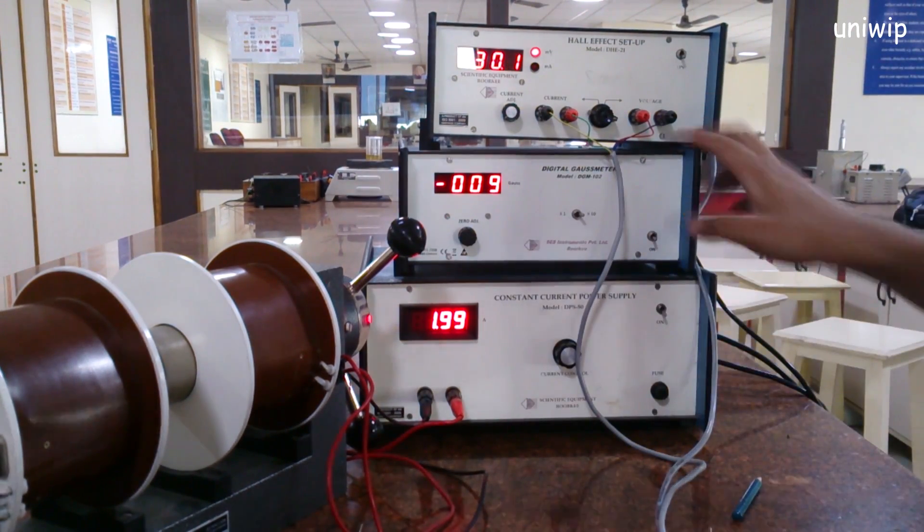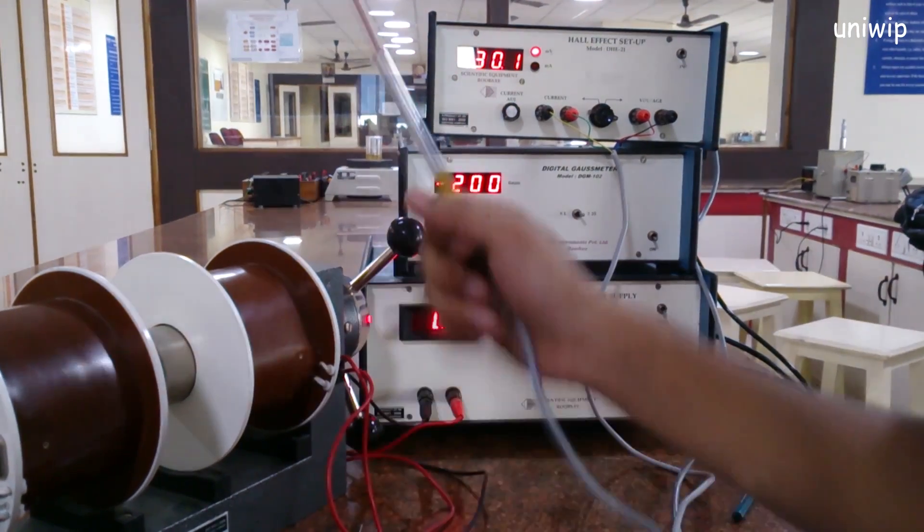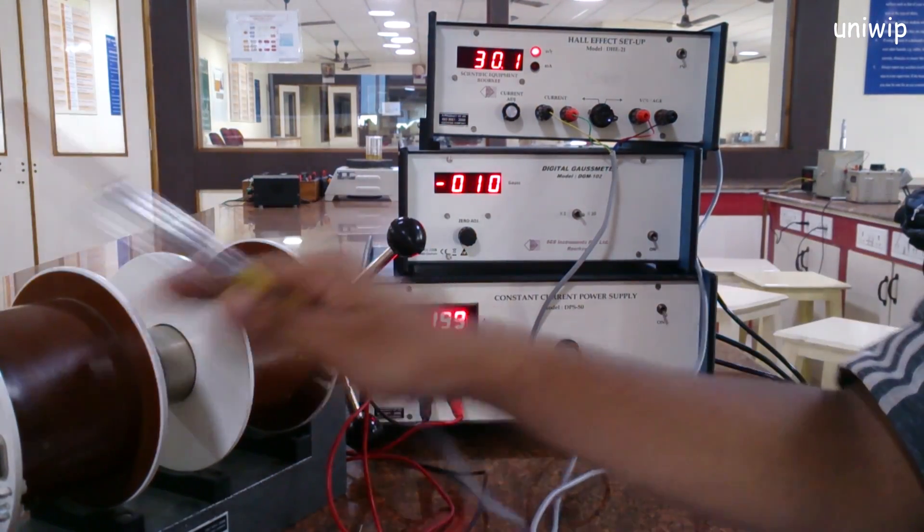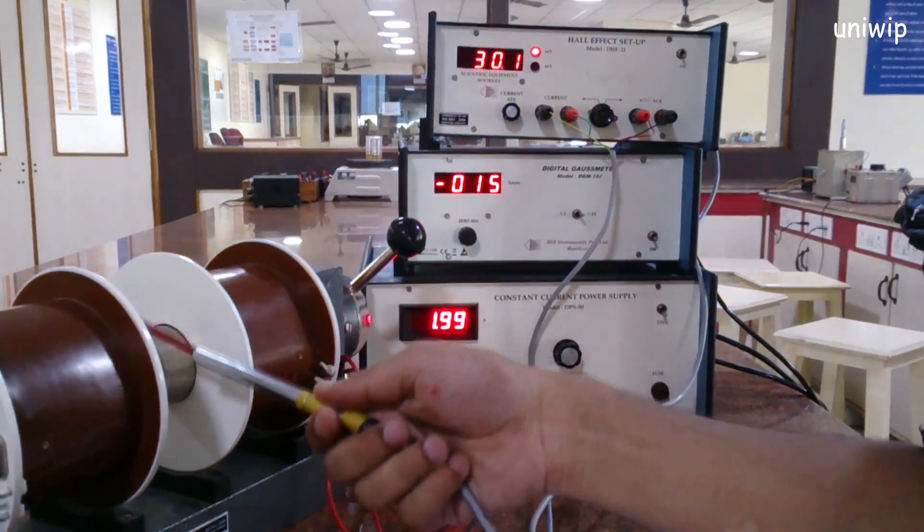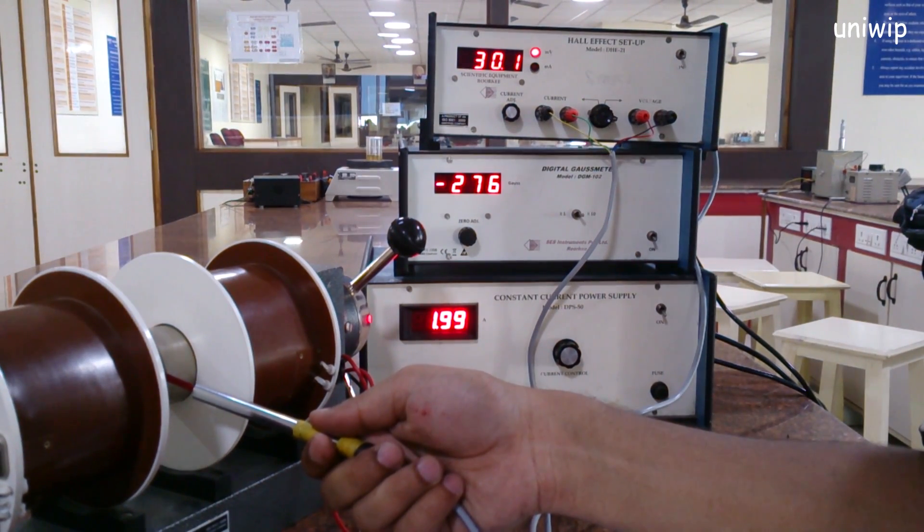This right here is my gaussmeter. This will help me measure the magnetic field strength within my electromagnet. This setup right here is my electromagnet. So when I put my probe inside, see this is my gauss reading.